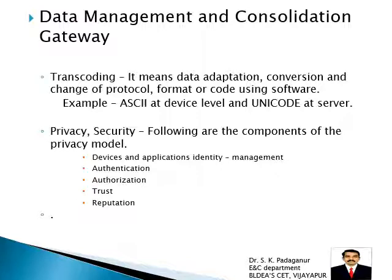Privacy and security are also important. Access to data needs to be secure. The gateway manages device and application identity through a privacy model that includes authentication, authorization, trust, and reputation. If you are using any IoT protocol, someone must authenticate you — verifying whether you are a legitimate user. Authorization requires a security code; only if you know that code can you access the IoT data.